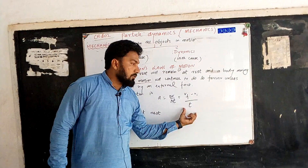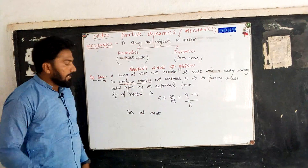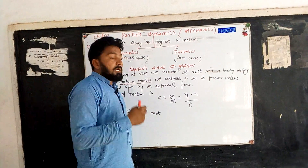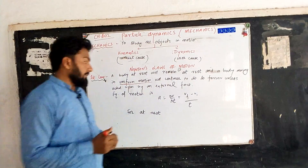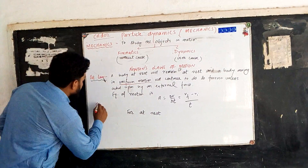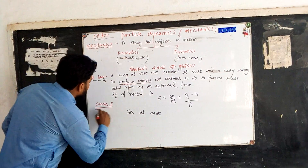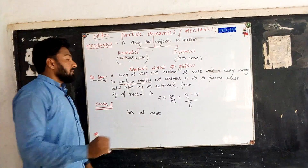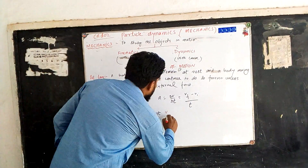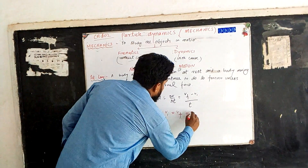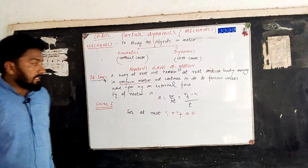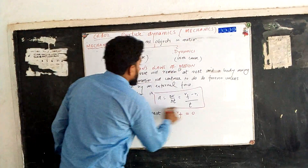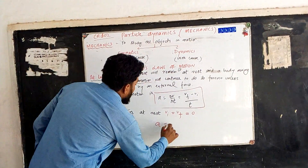Acceleration is defined as vf minus vi over t — final velocity minus initial velocity over time. We have two cases to discuss. Case 1: object at rest. When the object is at rest, the initial velocity equals zero and the final velocity also equals zero. Substituting into the equation, acceleration equals zero.